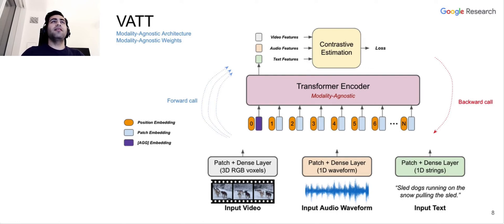In the second setting, which is modality agnostic architecture and modality agnostic weights, we have similar raw to vector space projection, but we share the transformer encoder across different modalities. So this means that we have three forward calls for each of the modalities. And once we have the features for each of those modalities, we have one loss, but we have one backward call. And this enables us to only rely on and update one set of weights for extracting semantic features for three modalities.